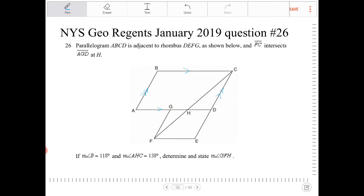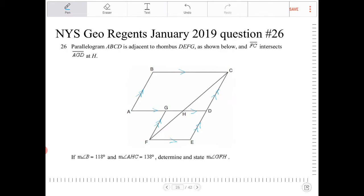And if that's the case, and DEFG is a rhombus that's adjacent to the parallelogram, that means this side will also be parallel to that side. And this side is also parallel to this side. They all share the same parallel markings there.